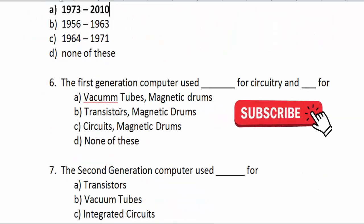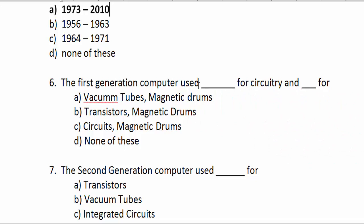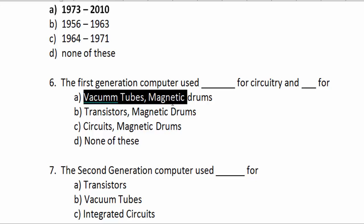The first generation computer used vacuum tubes or magnetic drums.